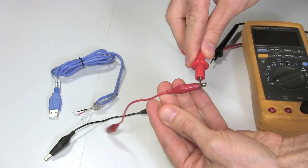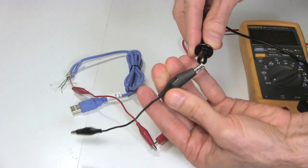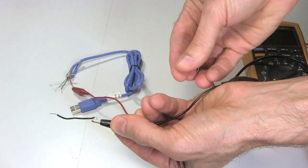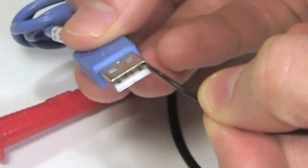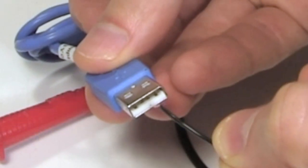I put alligator clips on one meter probe and then connect to the red wire. I connect one end of another wire with alligator clips to the other meter probe and a small wire to the other end. One of the power pins causes the meter to beep, but not the other pins. So the red wire is connected to one of the power pins.